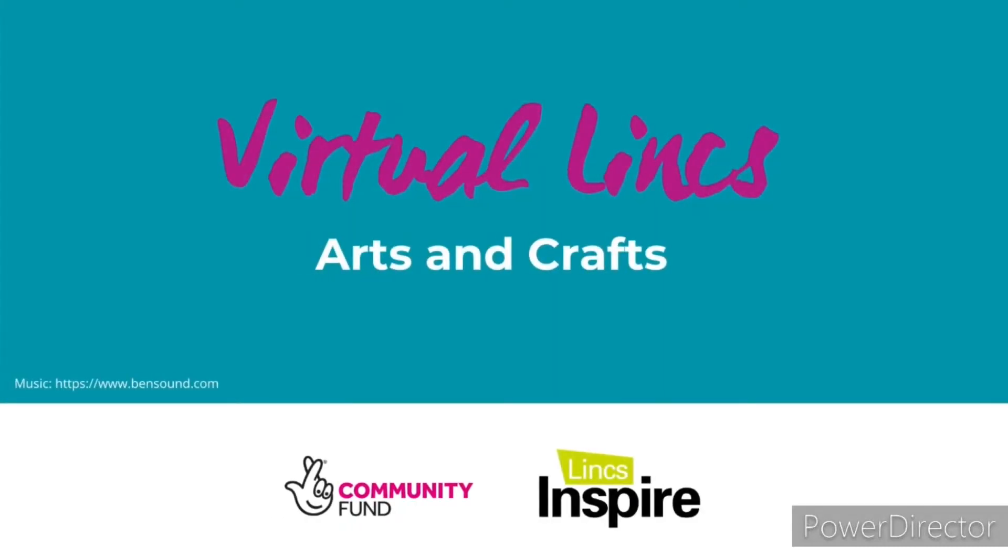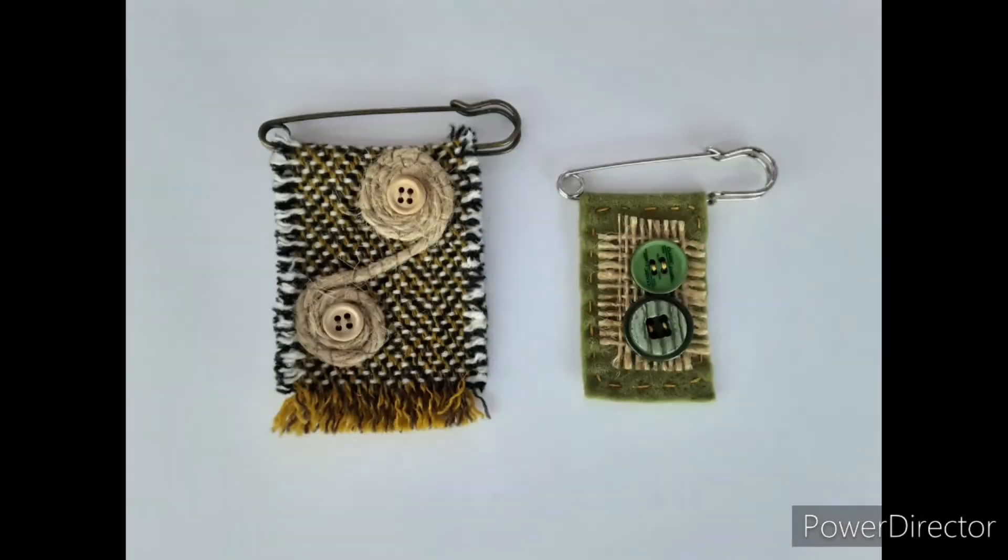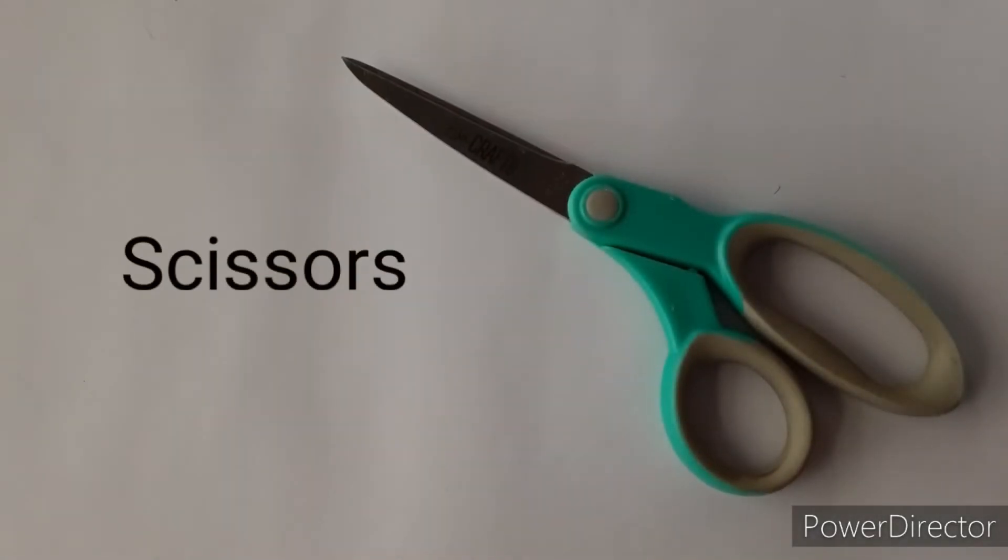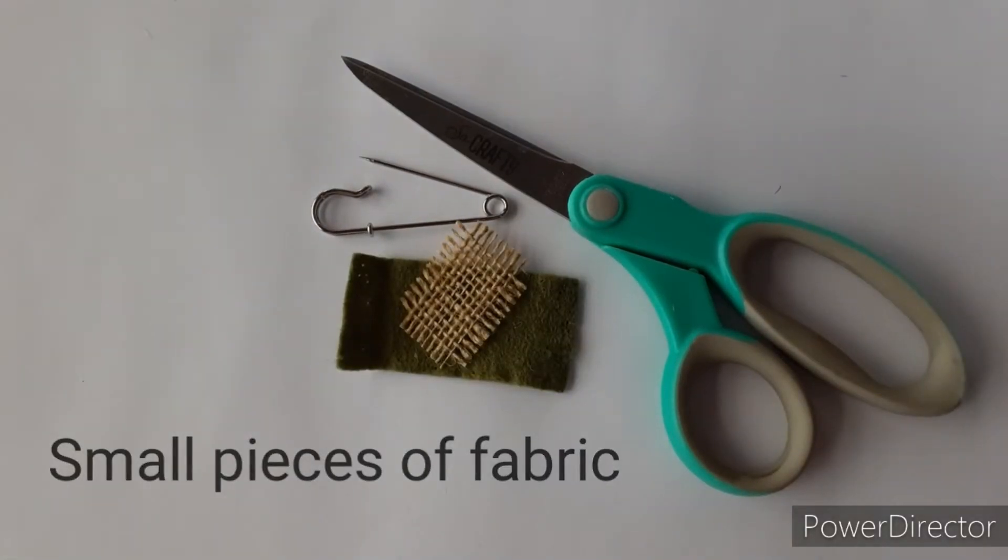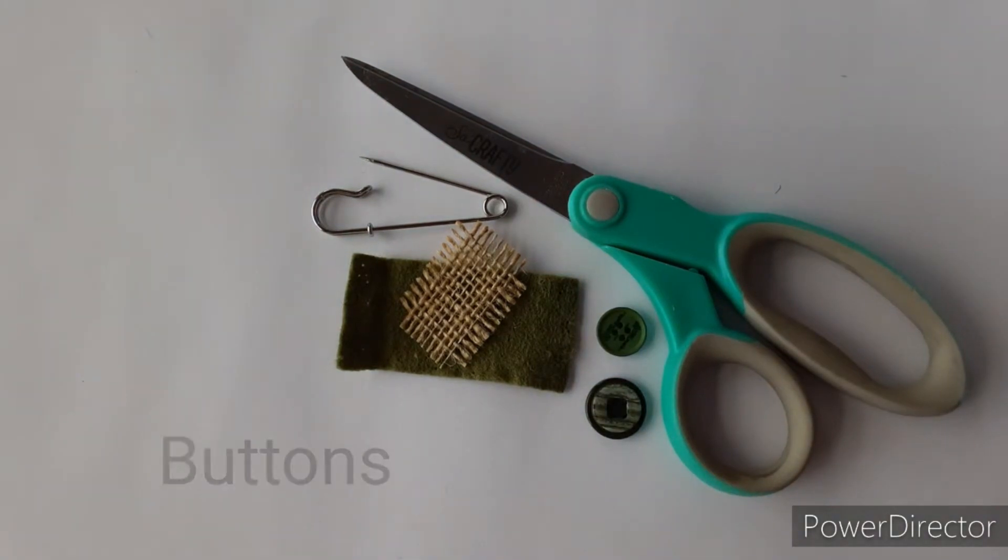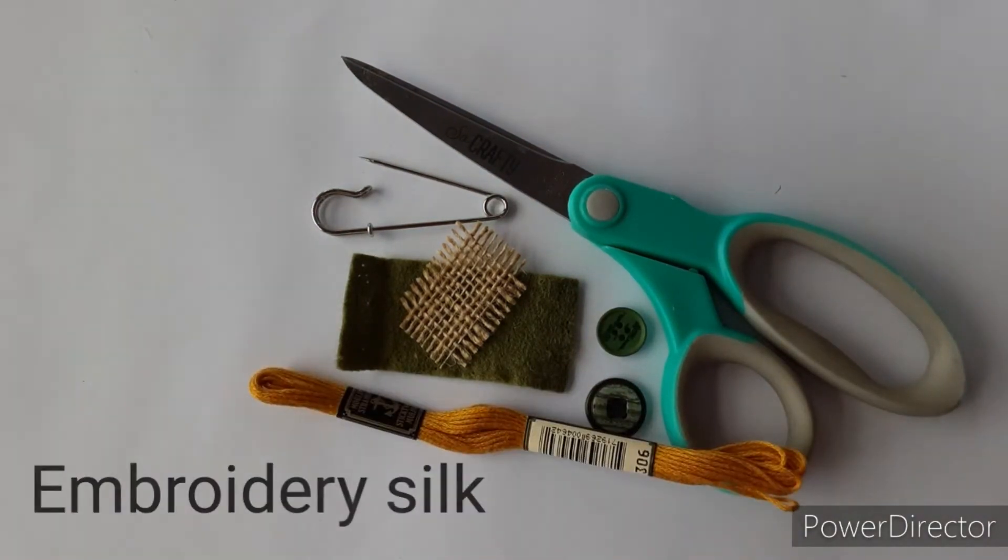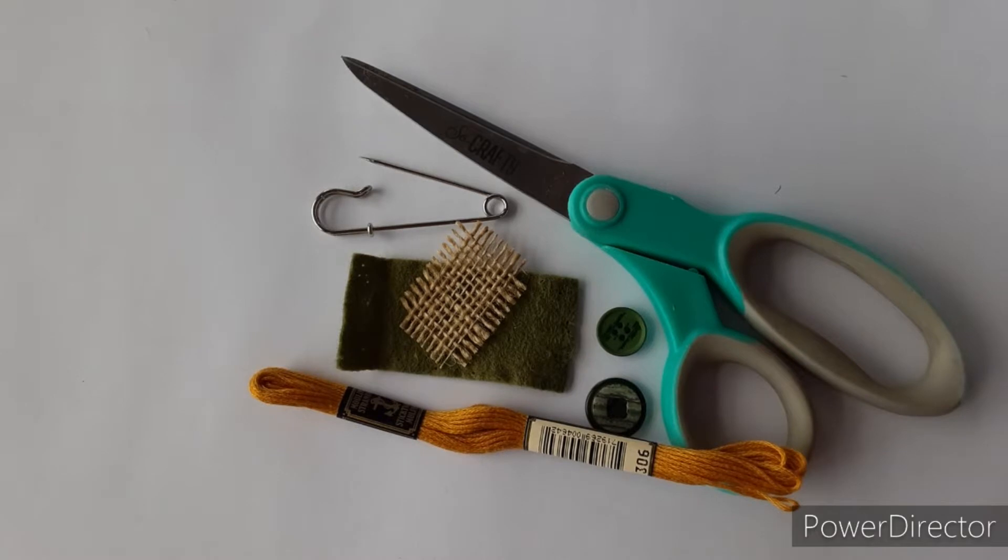In today's tutorial we're going to be making a kilt pin brooch. The items you will need are a pair of scissors, a kilt pin, some small pieces of fabric, some buttons, some embroidery silk, a pin and a needle.